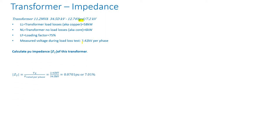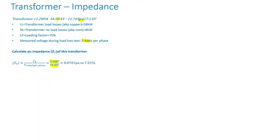Let's calculate the per-unit impedance. The magnitude of the impedance is the impedance voltage measured during load losses divided by the rated voltage of the winding where current is circulated. So it's 2.42 kV divided by 34.5 kV. Since this is a delta, the per-phase voltage equals the line-to-line voltage. If it were a Y at 34.5 kV, you would divide by the square root of 3. The result is 7.01 percent.